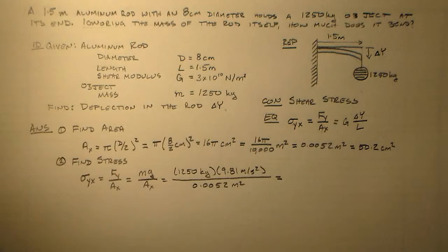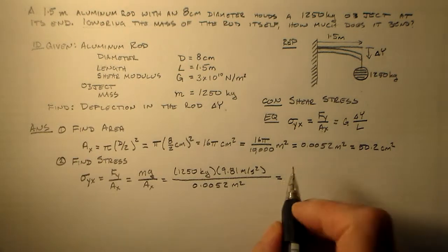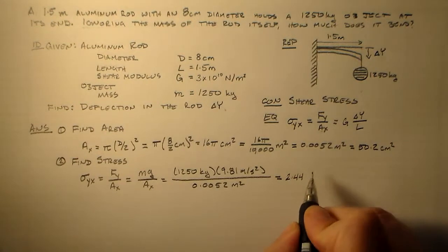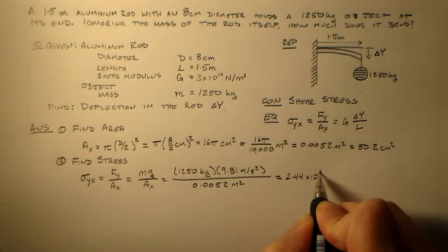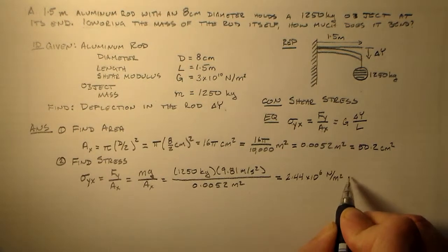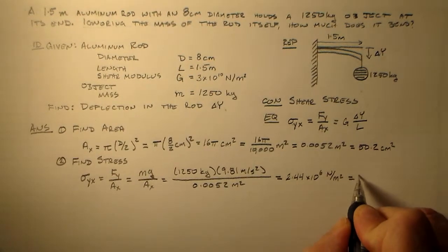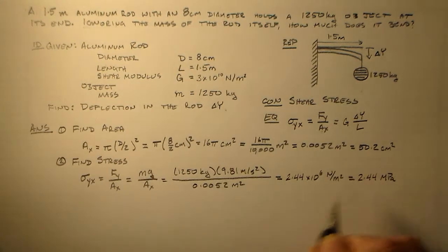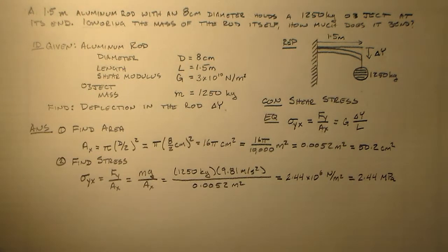And now, you know, you spend a little more time with your calculator, and that gives you 2.44 times 10 to the sixth newtons per square meter, which is 2.44 megapascals. So that's sort of the stress in the object. Now we have to figure out how much strain we get. Well, we don't need to figure out the strain because we're pulling the delta y out. We need to find the deflection.